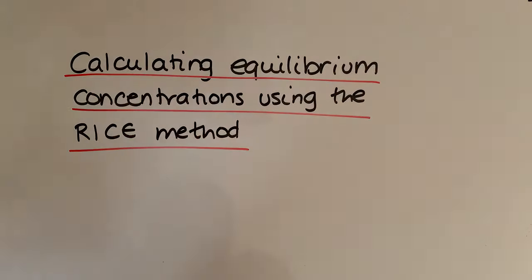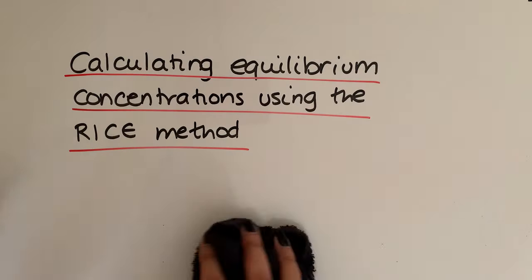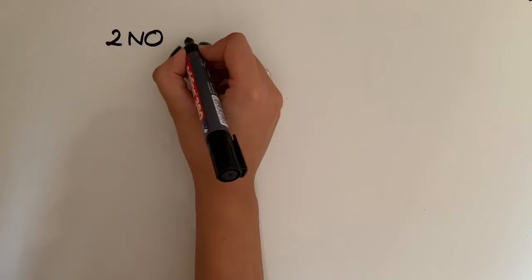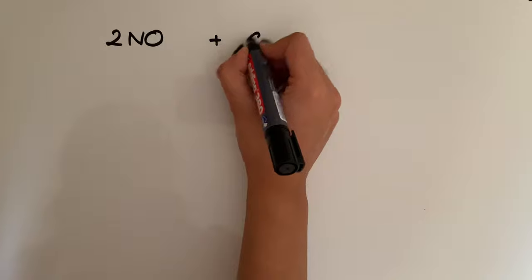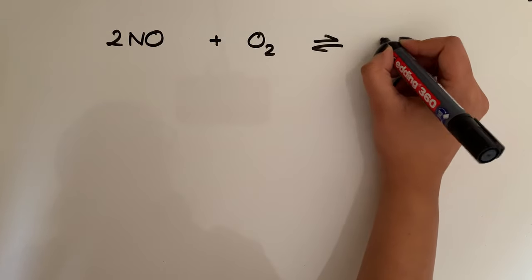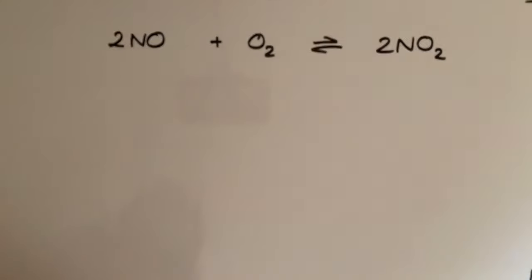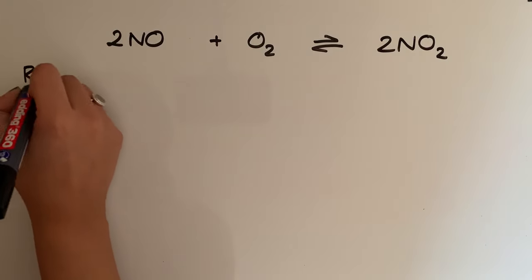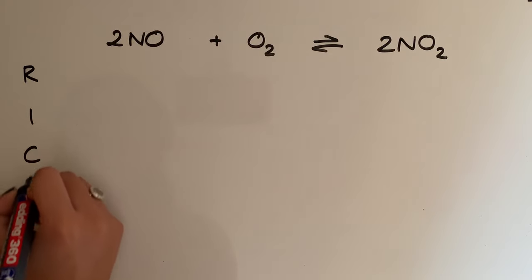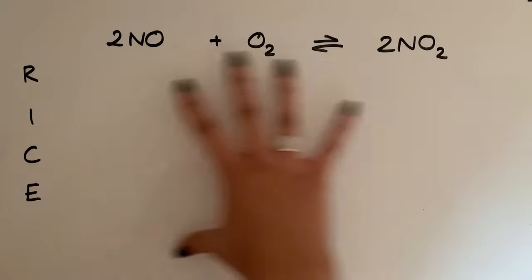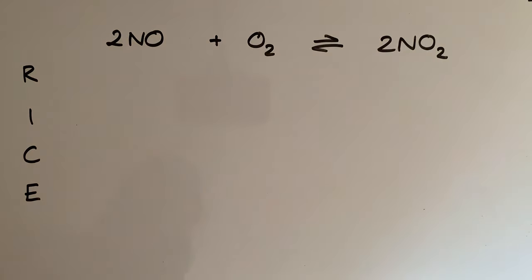I'm going to show you how you should set out your working for the RICE method. The first thing I do is write out the balanced equation slightly more spread out: 2NO + O2 → 2NO2. Then along the left-hand side, I'm going to write RICE, and I will explain what each letter stands for. This is how you should set it out.